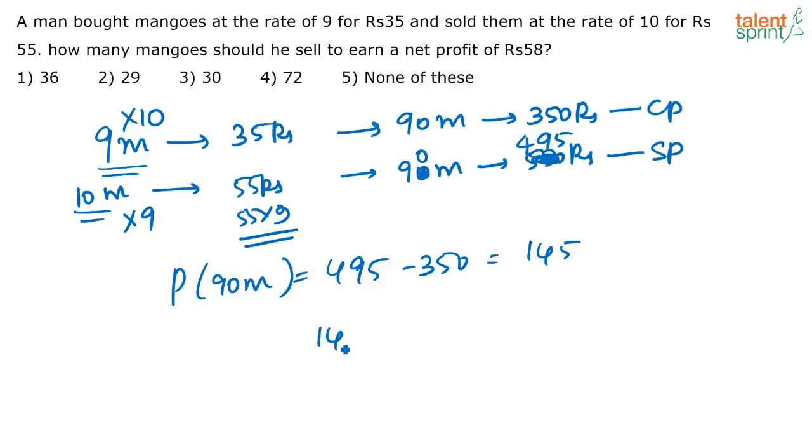So what is the profit that I will get for 1 mango? It will be 145 by 90. For 90 mangoes, I am getting a profit of 145. So for 1 mango, I am getting a profit of 145 by 90. Now the question is, how many mangoes should he sell to earn a profit of 58? How many mangoes should he sell? Let us assume that he has to sell x mangoes. So when he sells x mangoes, where profit of 1 mango is 145 by 90, he has to get a profit of 58 rupees.